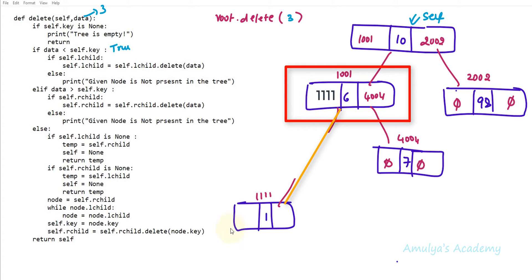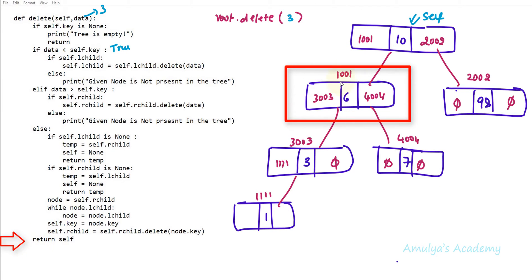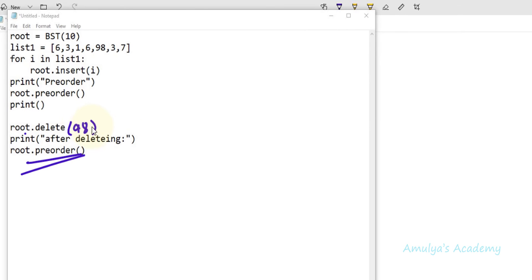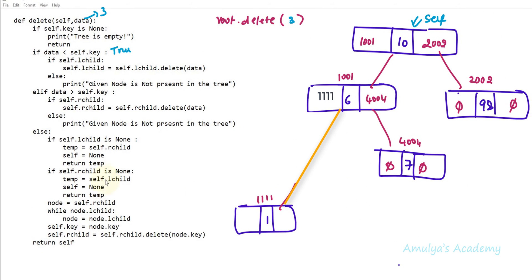The return value goes back to where it was called, so self.lchild becomes the left child node — node 3 is deleted and the subtree now points to its former child. There are no other statements to execute, so it returns self (node 6) back to the delete call for the full tree, which in turn returns self (the root) back to the main program. Next it will print the tree.